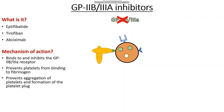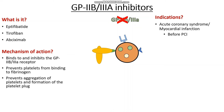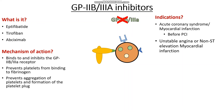So when do we actually use GP2B3A inhibitors? We use them in things like acute coronary syndromes or myocardial infarctions, especially if the patient is about to undergo a PCI — a percutaneous coronary intervention. We may also use them in things like unstable angina or non-ST elevation myocardial infarction to stop these diseases progressing into an ST elevation myocardial infarction. If what I'm saying isn't making much sense right now, don't worry — a lot of this is cardiology rather than hematology, and the following videos will focus on how they work in the cardiovascular system.